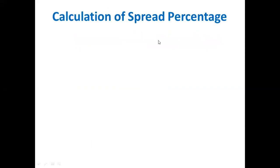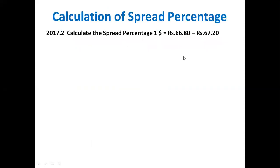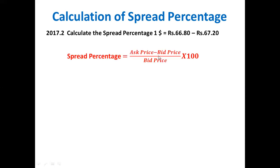Now let us take another problem which appeared in the 2017 exam for two marks. Calculate the spread percentage when one dollar equals 66.80 rupees and 67.20 rupees. Can you tell me what is the ask price and what is the bid price? Exactly — 67.20 is the ask price and 66.80 is the bid price.